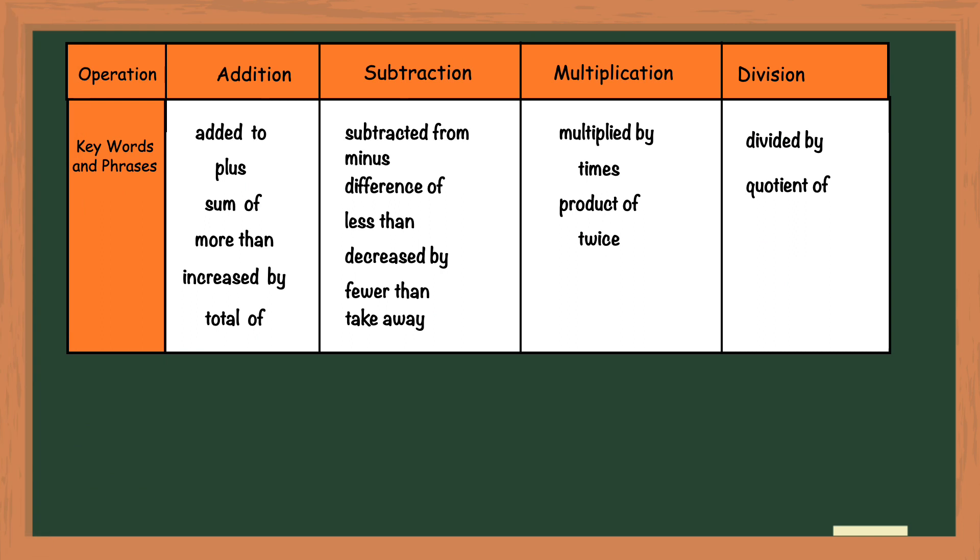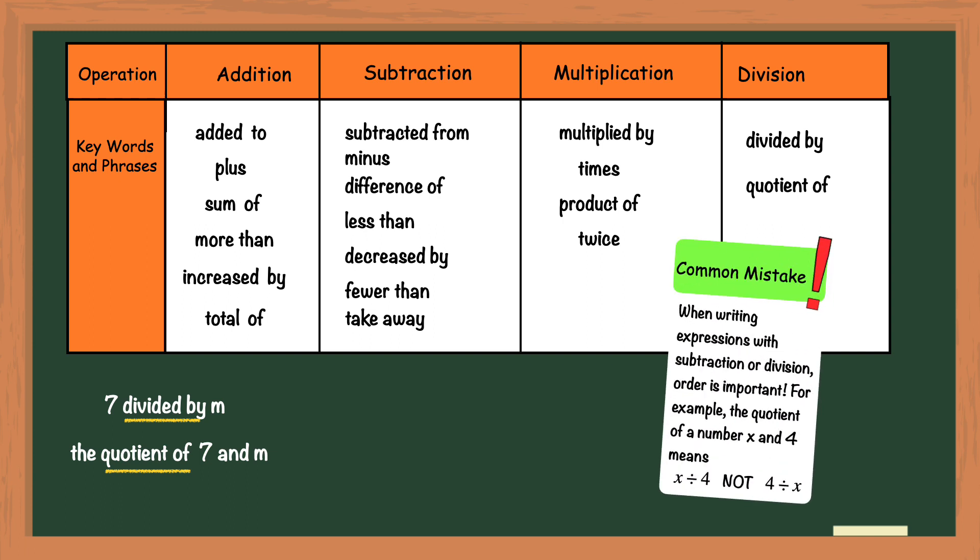The last operation I'm going to look at is division and my table is now complete. Since I've run out of space in the table I'm going to write the phrases here below it. The division is pretty straightforward here but the most common mistake that people make is not following the order. Division does not have words like than and from in its phrases so you need to follow the exact order given in the phrase.